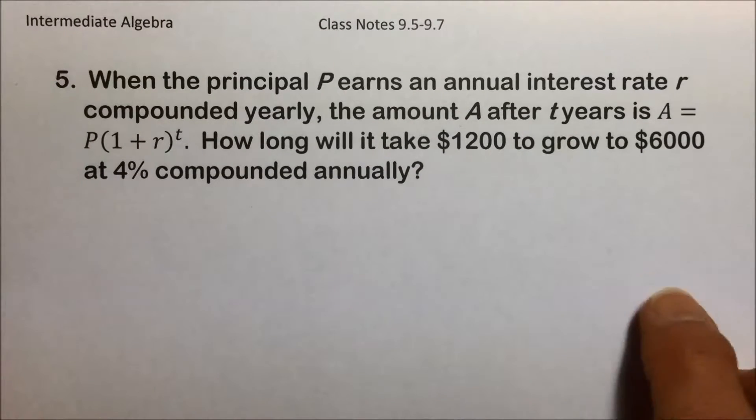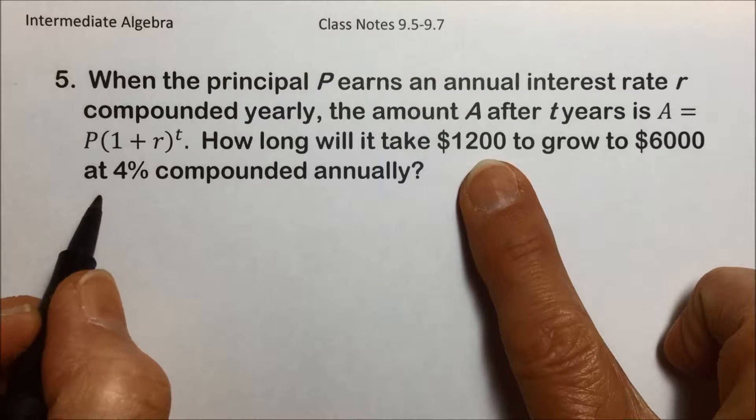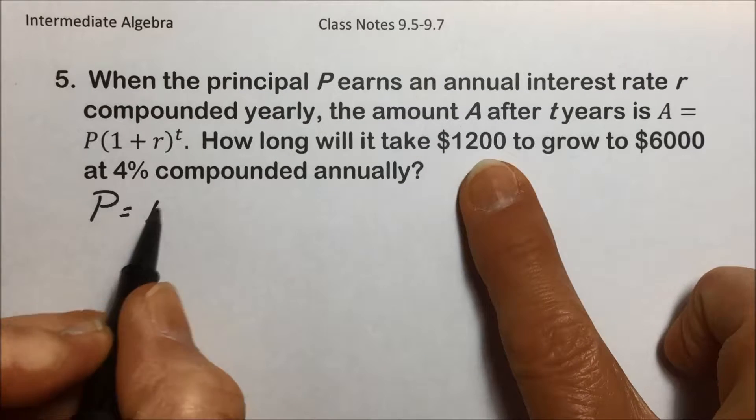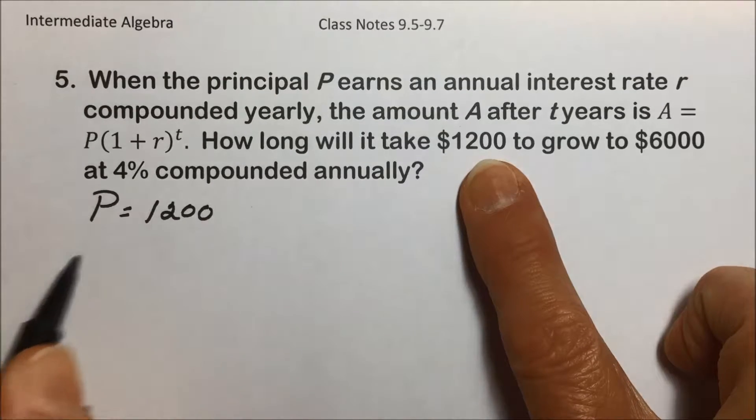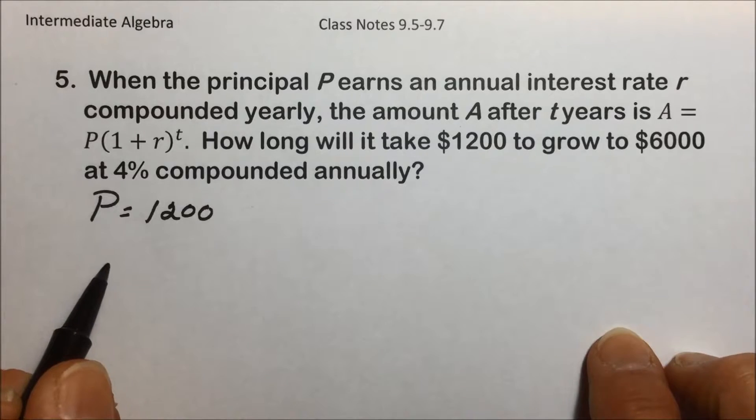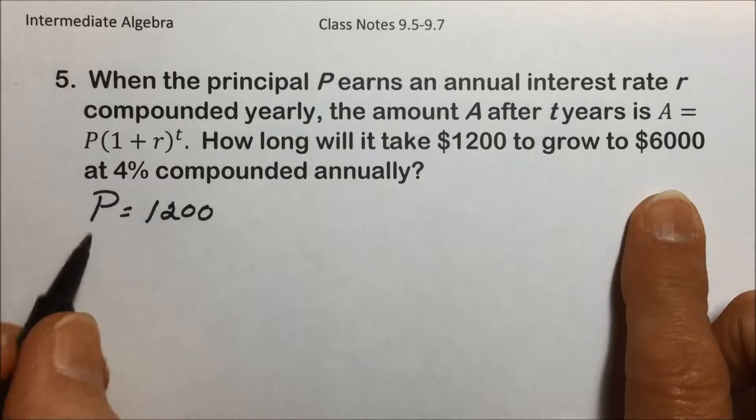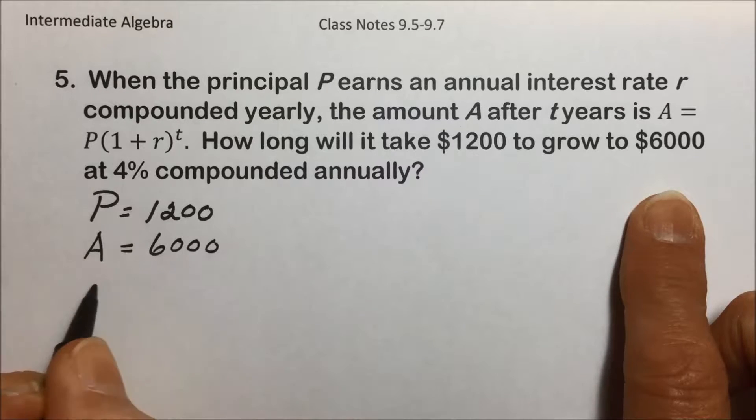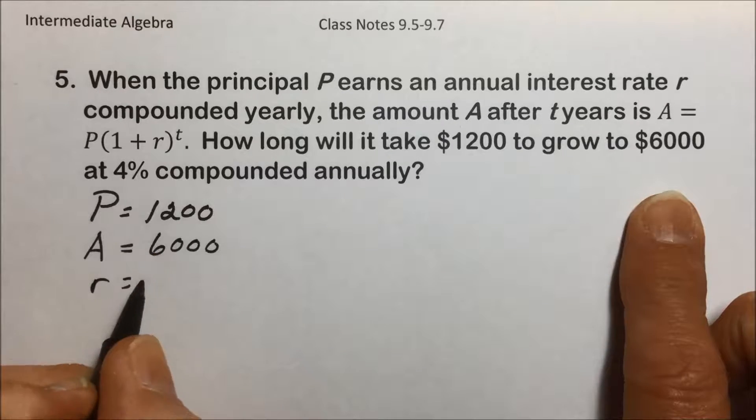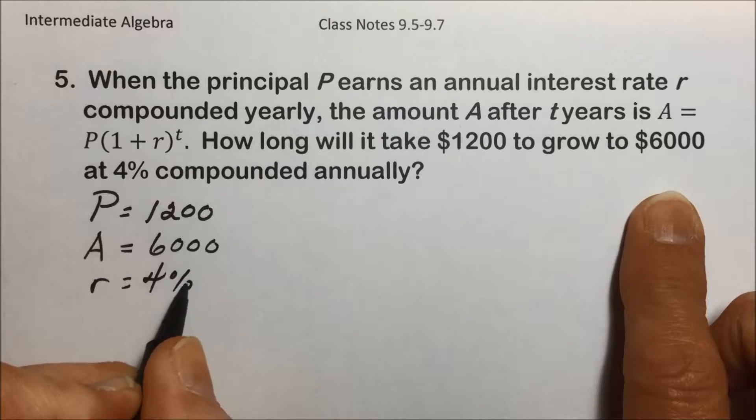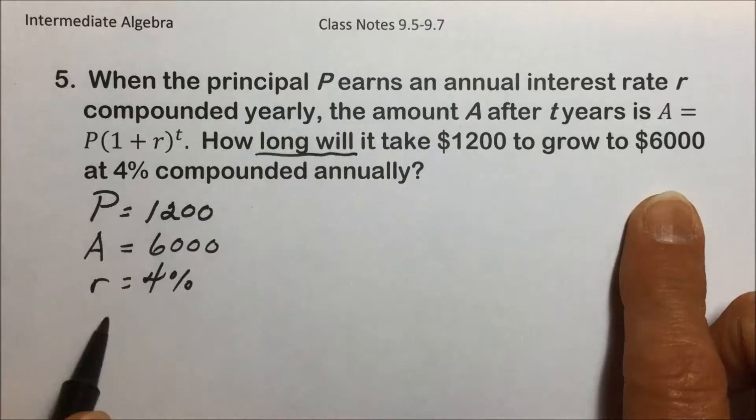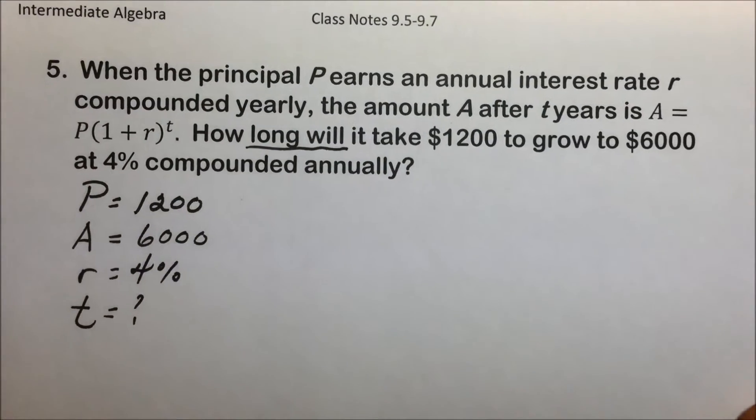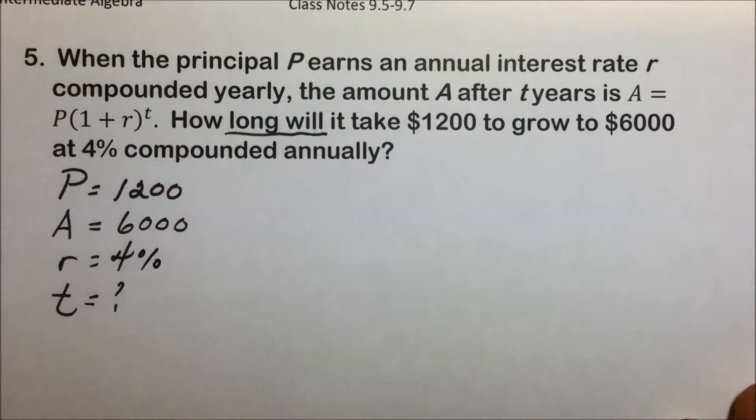So gathering the information that we're given, $1,200 is what they're initially starting out at, that would be the principal amount. It's growing to an ending amount of $6,000. They're telling us the annual interest rate is 4%, and the question is how long will it take? So it's t that we are looking for in this particular problem.